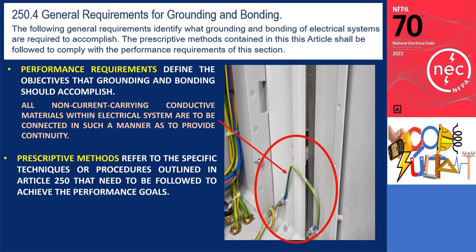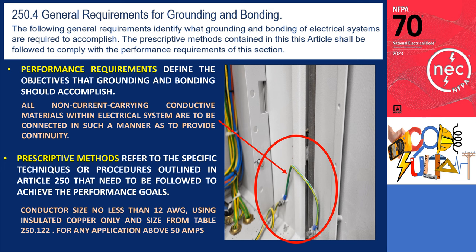For example, a prescriptive method mandates that all metal enclosures should be bonded using an insulated copper conductor of at least 12 AWG, as specified in Table 250.122, for any application above 50 amperes.